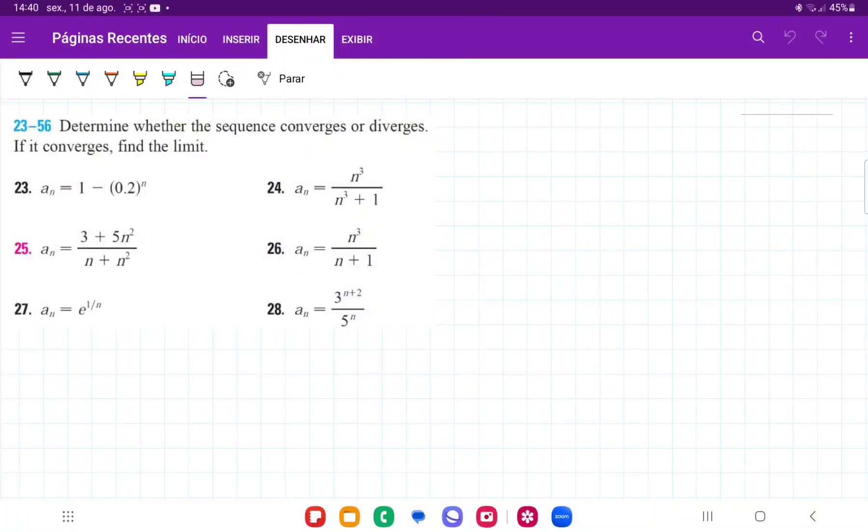So for number 23, they want us to check if this sequence here converges or diverges.